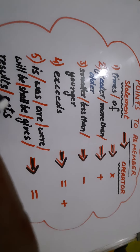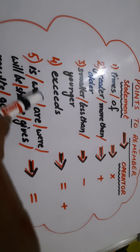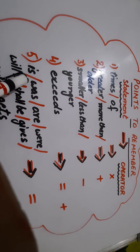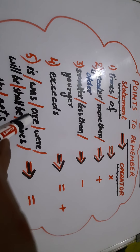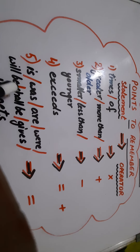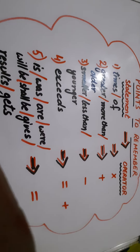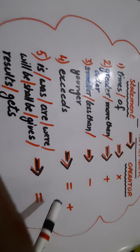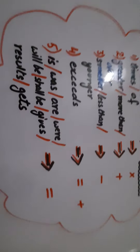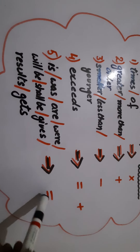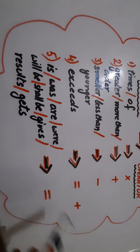All the helping verbs — like 'is', 'was', 'are', 'were', 'will be', 'shall be', 'gives', 'results', 'gets' — for these words, we use equal to.